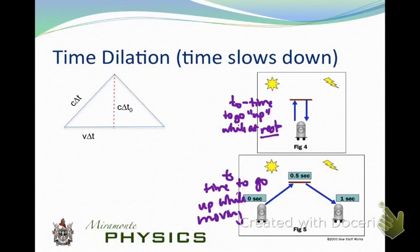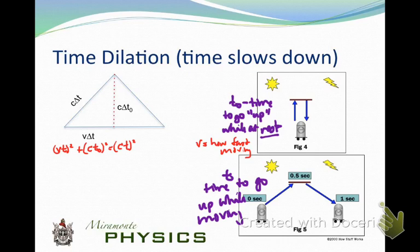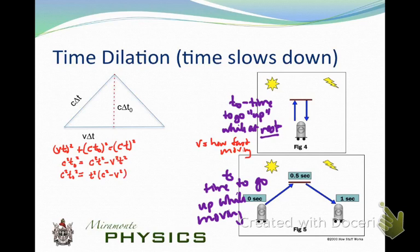We have a right triangle here. We write: (v·ΔT)² + (c·ΔT₀)² = (c·ΔT)². I drop the deltas for simplicity. Now I solve for c·T₀² — I isolate T₀. I get c²T² − v²T², pull out T², and get T²(c² − v²) on one side and c²·T₀² on the other.